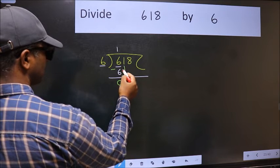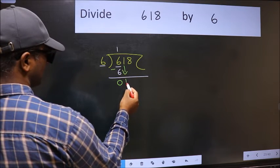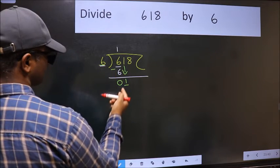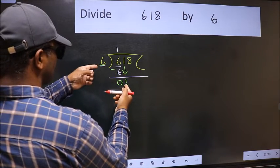After this, bring down the beside number. So 1 down. Now here we have 1 and here 6. 1 is smaller than 6.